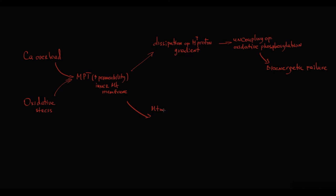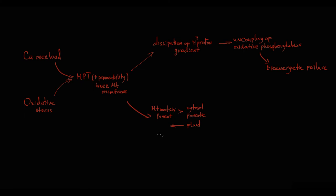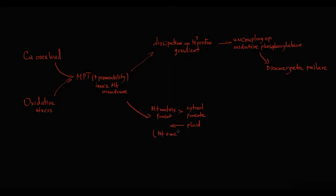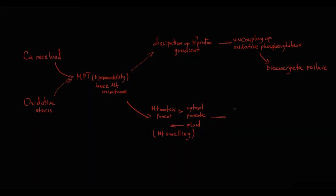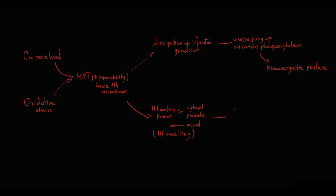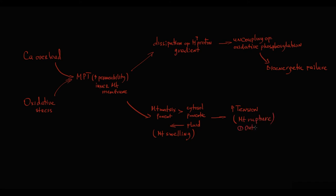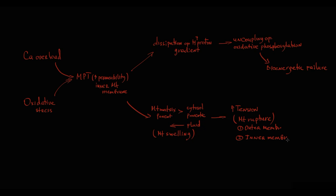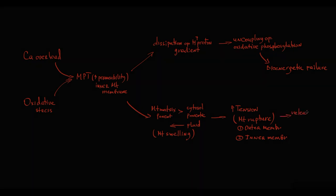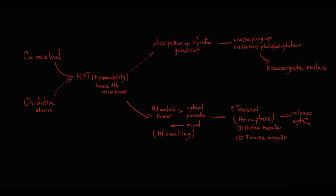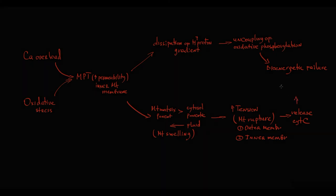Also, because the mitochondrial matrix has higher protein concentrations than the cytosol, fluid flows from the cytosol into the mitochondrial matrix. Initially this results in mitochondrial swelling. At a critical point of fluid accumulation, the mechanical stress on the mitochondrial membranes becomes so high that it causes rupture — first of the outer mitochondrial membrane, then of the inner membrane. Disruption of the outer mitochondrial membrane leads to release of cytochrome C into the cytosol, where it activates apoptosis.